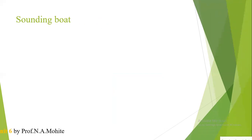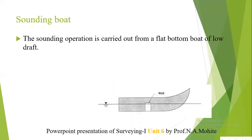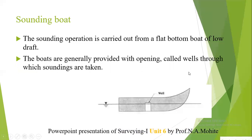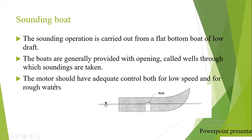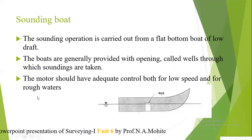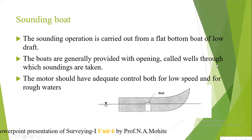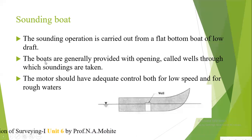To determine the depth of water, the sounding boat is the starting equipment used. The sounding operation is carried out from a flat bottom boat of low draft, which has been provided with openings called wells, through which soundings are taken. The motor should have adequate control for both low speed and rough waters.